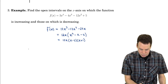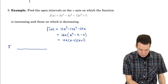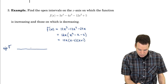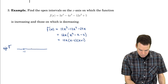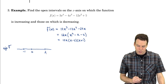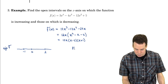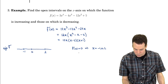So where is the derivative positive and where is it negative? We can see where it's zero. The derivative is zero at x equals negative one, x equals zero, and x equals two. Those are the places where the derivative is zero — these are the critical numbers.